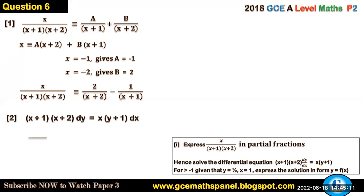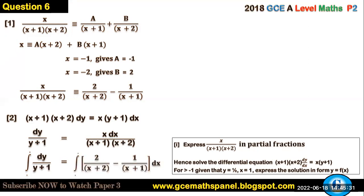From this point, the next thing we can do is divide both sides by (y+1) and by (x+1)(x+2). So we have separated the variables. We can now introduce our integral signs: the integral of dy/(y+1) equals the integral of x/[(x+2)(x+1)]dx.